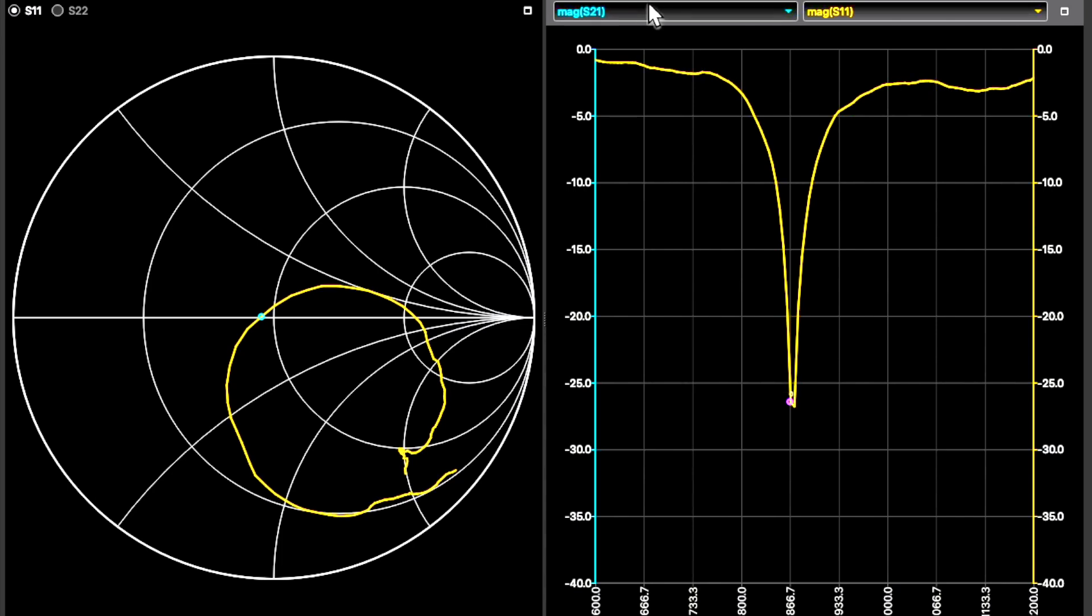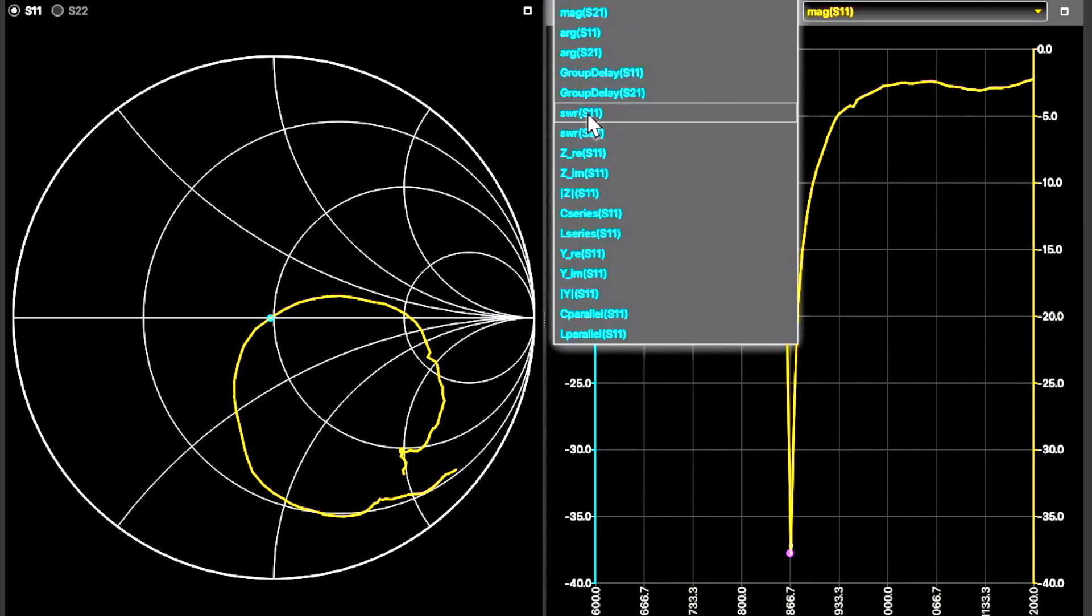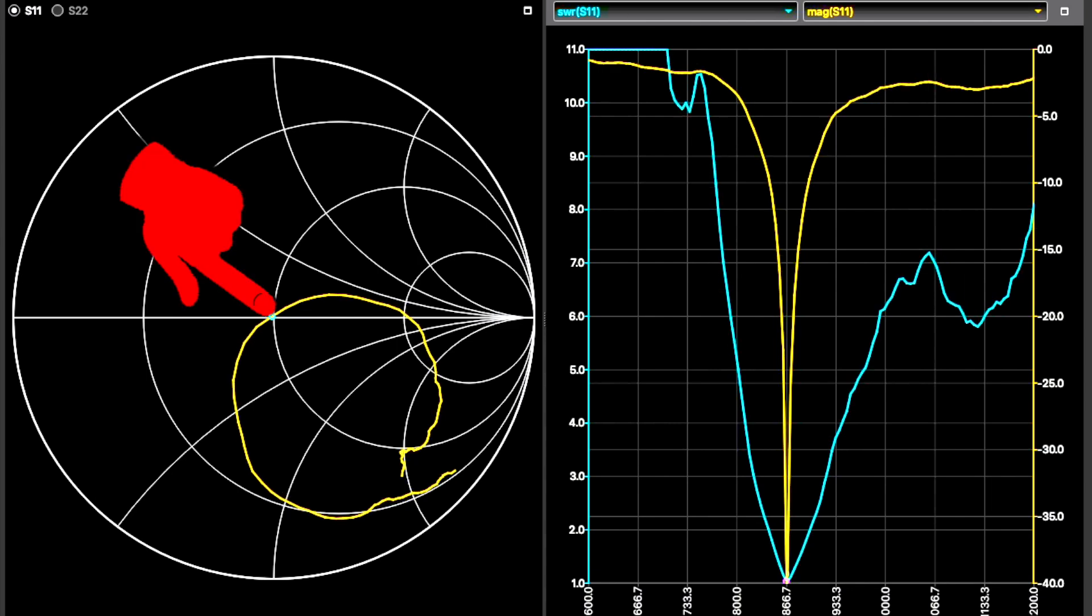The nanoVNA reflection measurement is showing exactly the desired resonance frequency. The VSWR is perfect at the center frequency and reflection loss is correspondingly high. In other words, we are achieving exactly 50 Ohms antenna impedance.